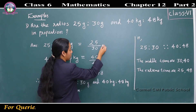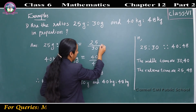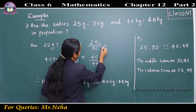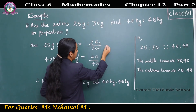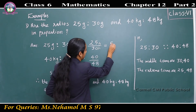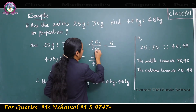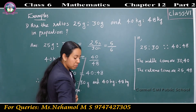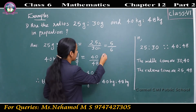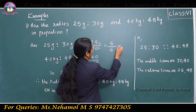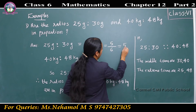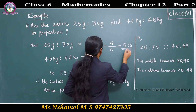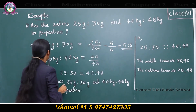We can convert this fraction to its lowest form. 25 divided by 5 is 5, and 30 divided by 5 is 6, giving us 5 by 6, that is 5 is to 6.